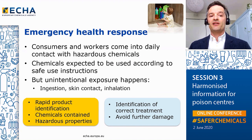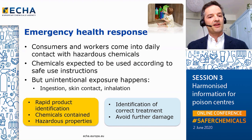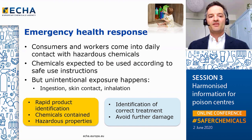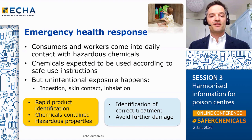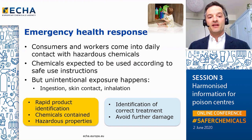All these chemicals are expected to be safe when used according to their instructions. However, an unintentional exposure can happen, for instance, by ingestion, inhalation, or through skin contact, and this could be due to accidents or inappropriate use. When this happens, it's crucial for medical staff to have access to key information about the chemicals in the product in order to choose the right treatment and avoid further damage. This is the main task of poison information centers — they need to identify the product quickly, know the chemical composition, and be able to apply the correct emergency measures.